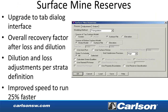In Carlson Mining, the surface mine reserves dialog has been overhauled to organize all the different options into separate tabs. There are new settings for calculating overall recovery after loss and dilution, and you can define dilution and loss adjustments per strata. The routine has also been improved to run 25% faster.